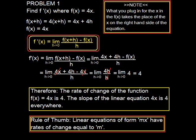So this signifies that the rate of change of the function f(x) equals 4x is equal to 4. Which also tells us that the slope of the equation is 4 and that's everywhere.